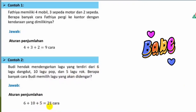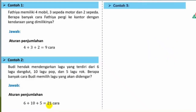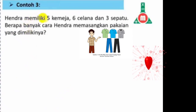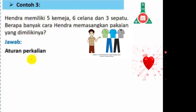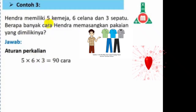Contoh 3: Hendra memiliki 5 kemeja, 6 celana, dan 3 sepatu. Berapa banyak cara Hendra memasangkan pakaian yang dimilikinya? Ini mirip dengan contoh Tony sebelumnya. Kita menggunakan aturan perkalian karena kemeja, celana, dan sepatu digunakan secara bersamaan. Banyaknya kemeja 5, celana 6, sepatu 3, jadi 5 kali 6 kali 3 sama dengan 90 cara.